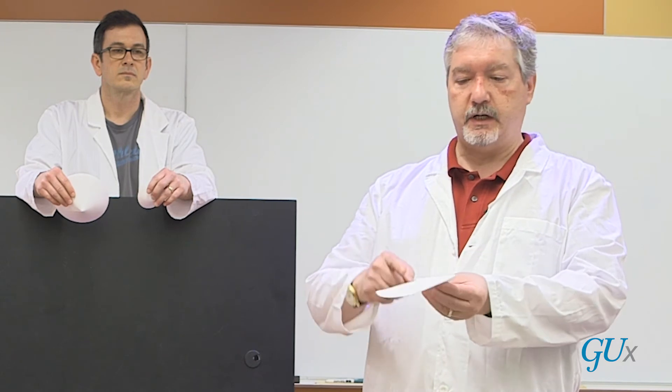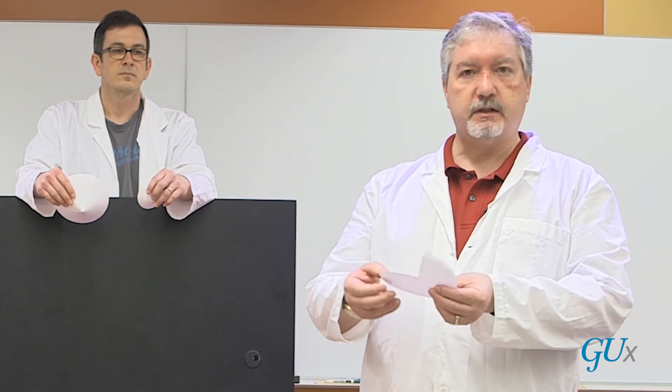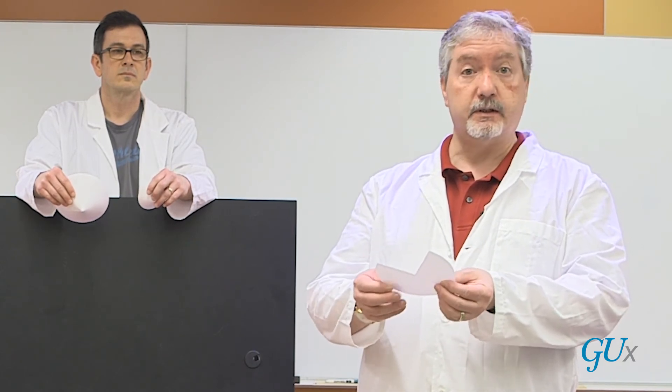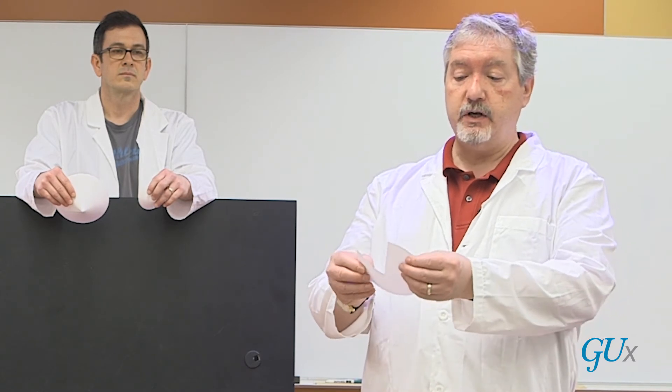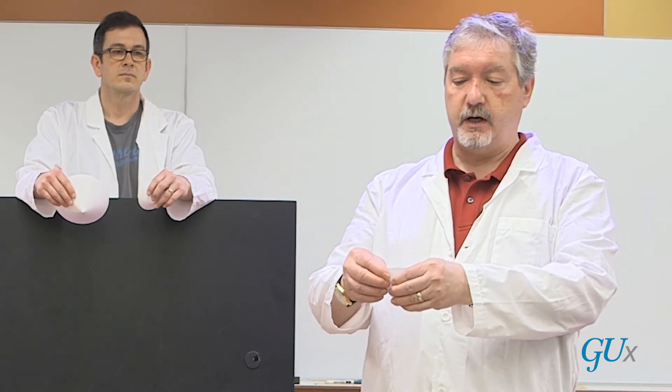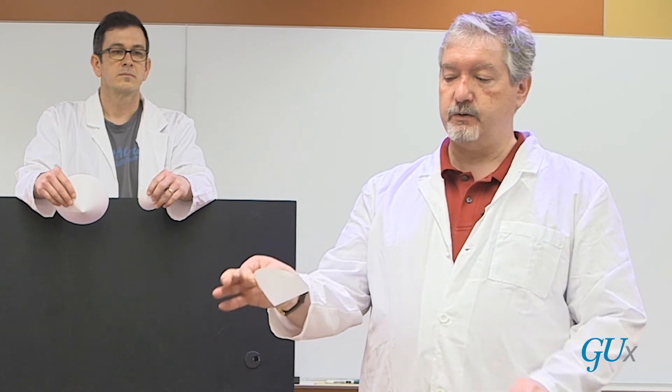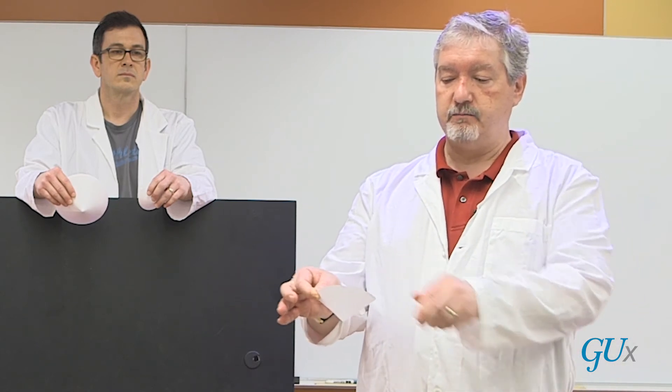So to make a cone, you take a circle and you cut some piece out of it. It doesn't have to be 90 degrees like this one is. It can be any angle. And then all you have to do is match the two edges of the cutout to each other, and you have made a cone.